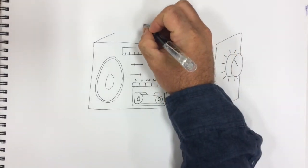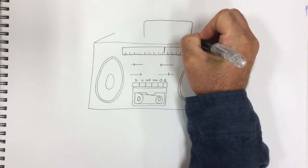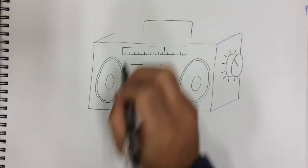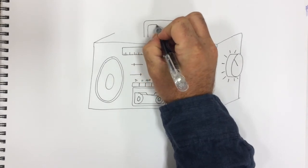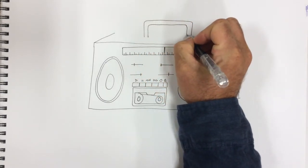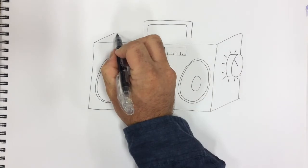Now we're gonna do three quarters of a rectangle. So go up, over and down. And then do it again, just a little bit smaller. And that's the handle for carrying it around. Close off the top.